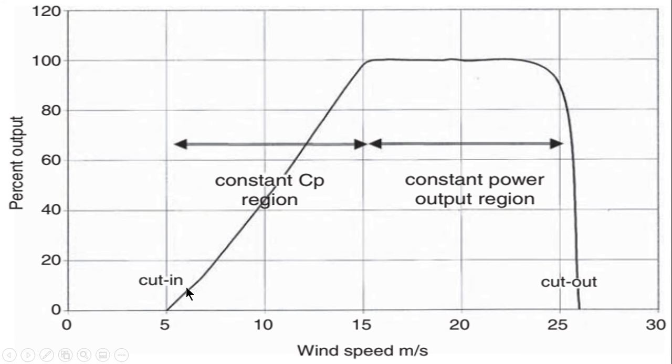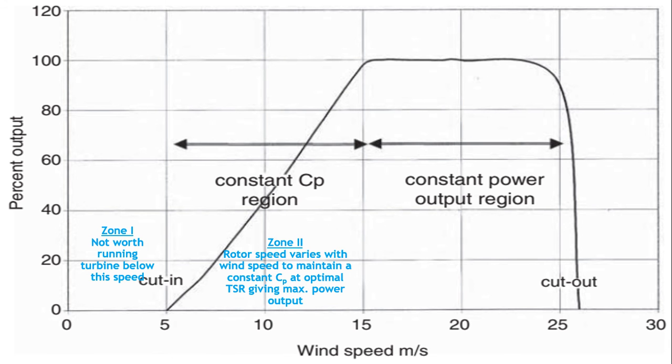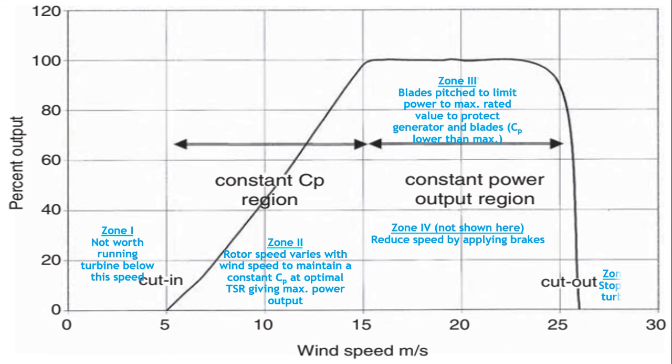After the maximum speed, further increase in speed is not encouraged and the windmill has to be stopped using brake mechanisms. There are different types of brakes available—electrical and mechanical brakes. Zone 1 and Zone 4, which is after the cut-out region, are the no operation zones.